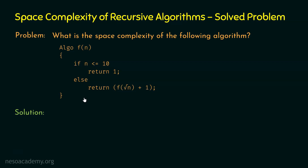In this algorithm, we are not using any complex data structure like arrays or linked lists. We are using the variable n, which is a simple variable and will not contribute much to the space complexity — it will take just a constant amount of space. So there is no complex data structure involved, and hence space complexity totally depends on the depth of recursion.